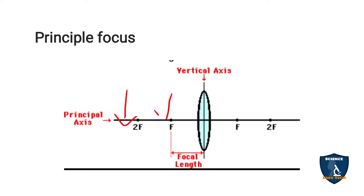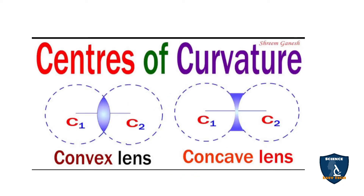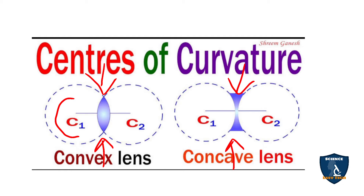And principal focus — in the principal axis line, you are keeping an object and you are focusing on it; that is called principal focus. The distance between the lens and that focus is called focal length. And the center of curvatures — each lens, whether convex or concave, has curvatures on both sides. The center point of the circle formed by the curvature is called C.